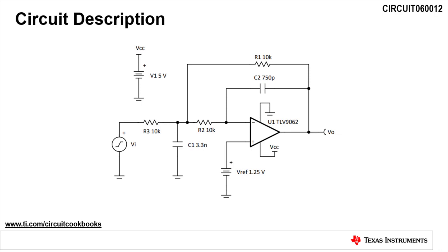The second step is to scale the component values calculated for 1 radian per second based on the desired cutoff frequency.